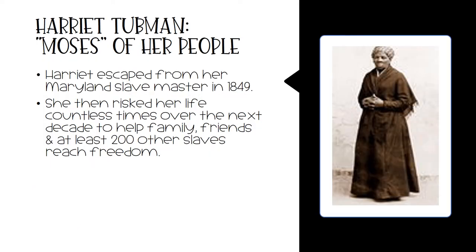Harriet Tubman escaped using the Underground Railroad. She escaped from her Maryland slave master in 1849. Instead of enjoying her freedom, she then risked her life countless times over the next decade to help family, friends, and at least 200 other slaves reach freedom.